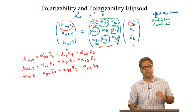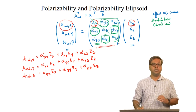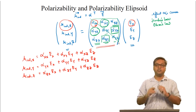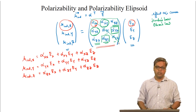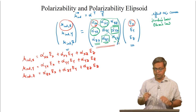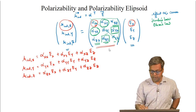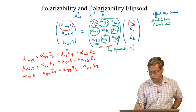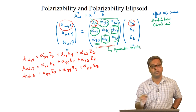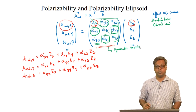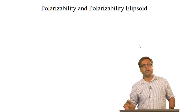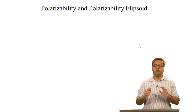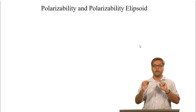This is with respect to the xyz coordinate system. The α matrix here is a symmetric matrix, and symmetric matrices can be diagonalized.